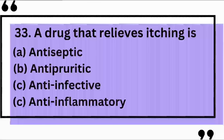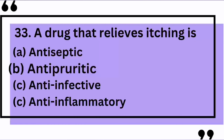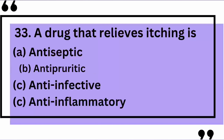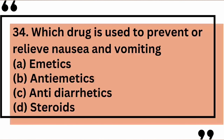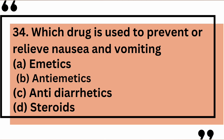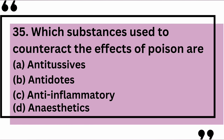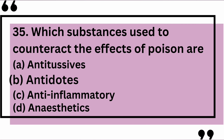A drug that relieves itching is — yes, the correct answer is B: antipruritic. Which drug is used to prevent or relieve nausea and vomiting? The correct answer is B: antiemetic. Which substances are used to counteract the effects of poison? The correct answer is B: antidote.